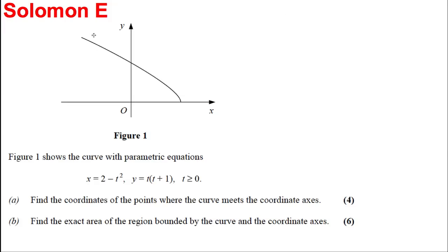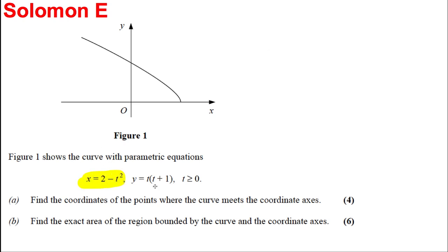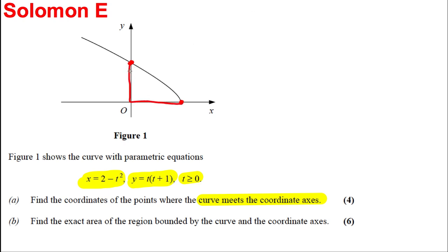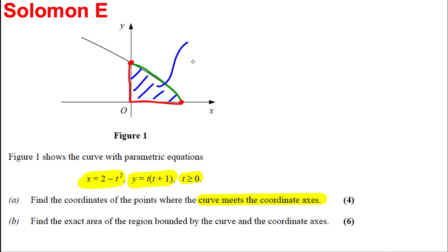We're integrating parametric equations. In figure 1, the curve is given by parametric equations x = 2 − t² and y = t(t + 1), with t ≥ 0. We need to find the coordinates of where the curve meets the coordinate axes, and then find the exact area of the region bounded by the curve and the coordinate axes.